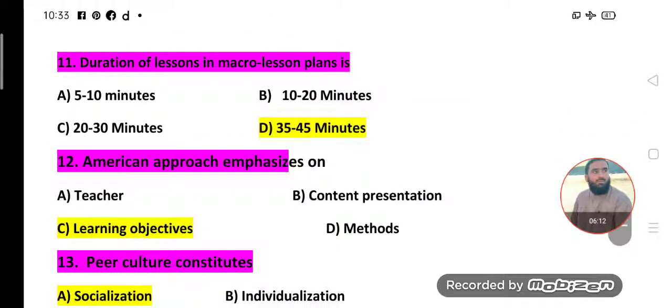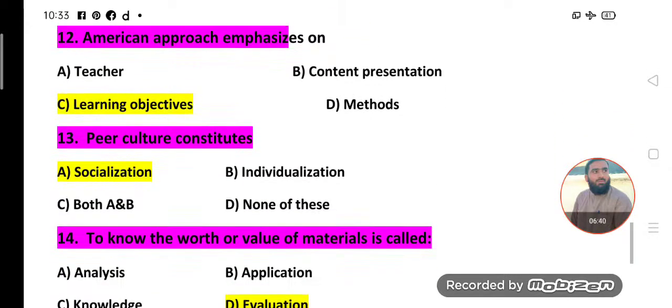MCQs number 11. Duration of lessons in macro lesson plans is: 5 to 10 minutes, 10 to 20 minutes, 20 to 30 minutes. Option D is the correct option which is 35 to 45 minutes. So duration of lessons in macro lesson plans is 35 to 45 minutes.